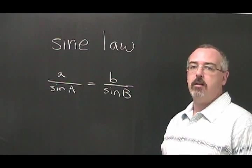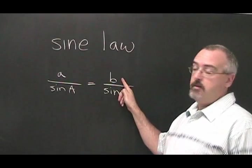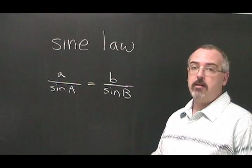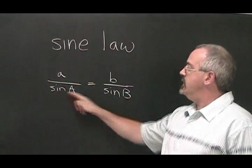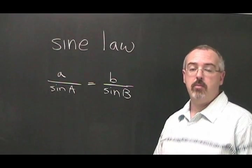The formula for sine law looks like this. A and B are both sides. Sine A and sine B are both angles. Notice that only sine is involved. You never use the cos button or the tan button when you use sine law.